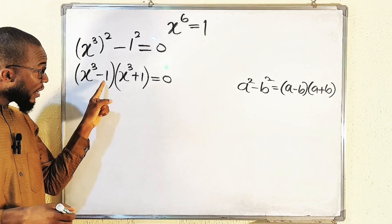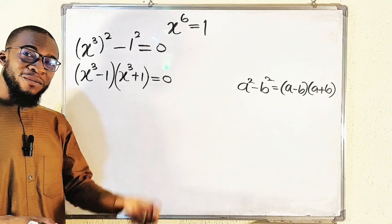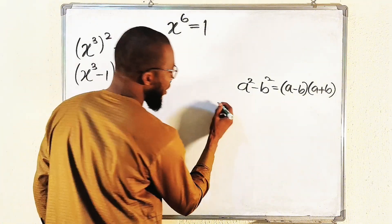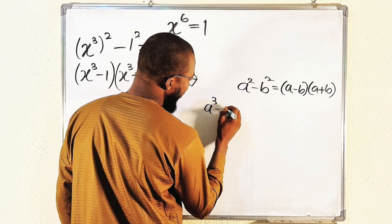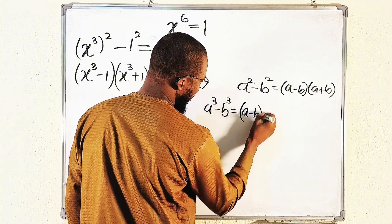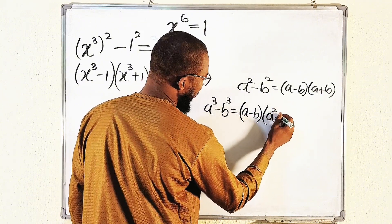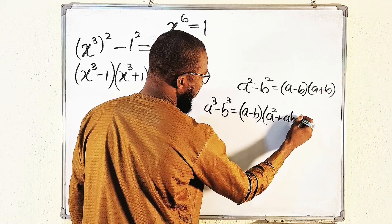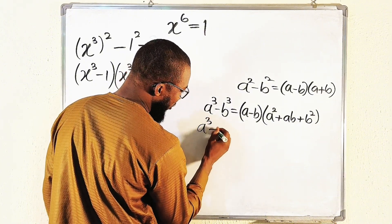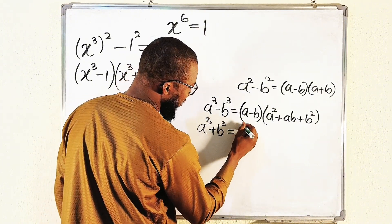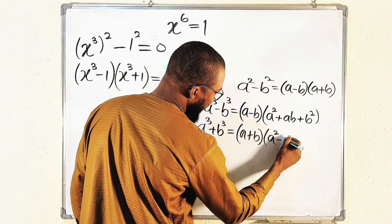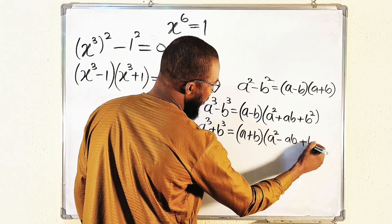Now we have a difference of two cubes and a sum of two cubes. For a³ minus b³, this equals (a minus b)(a² + ab + b²). For a³ plus b³, this equals (a plus b)(a² minus ab + b²).